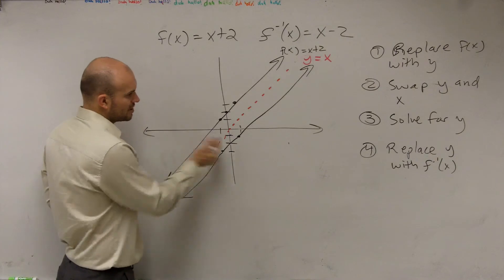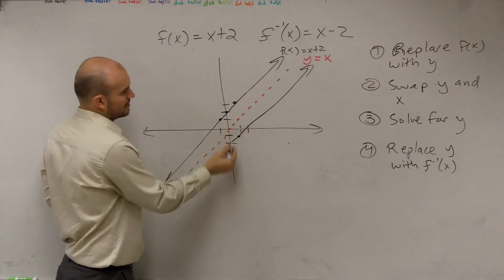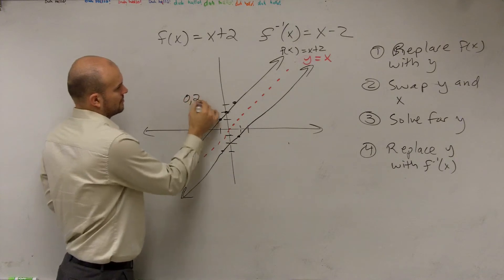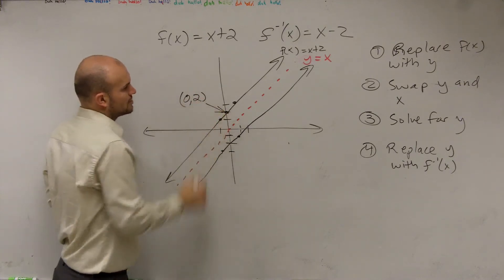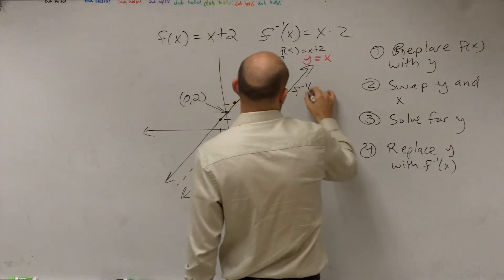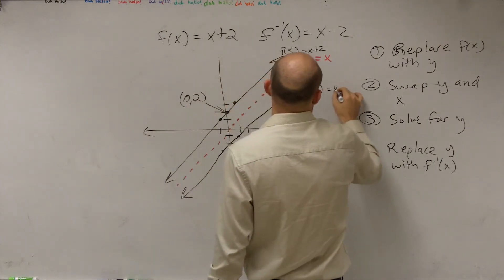And I don't want to get too strung up, but let's look at the point 0, 2. So if you guys look at the 0, 2, that's for f of x, and here's f inverse of x.